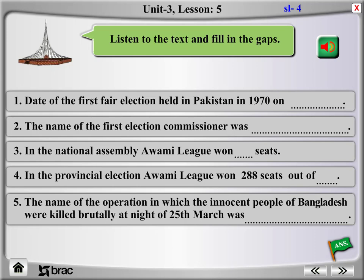Since 1947, this was the first election under the military government of General Yahya Khan. Justice Abdus Sattar was selected as the first election commissioner of Pakistan. In the election, the Awami League won 160 seats in the National Assembly and 288 seats in the East Pakistan Provincial Assembly simultaneously.